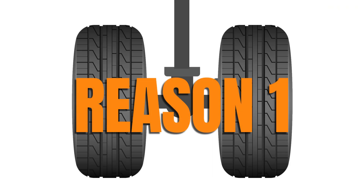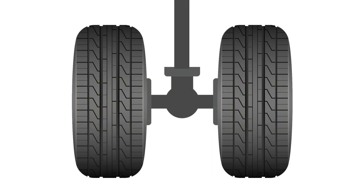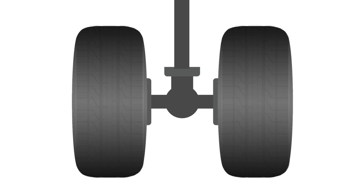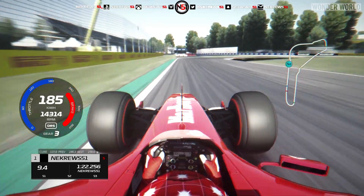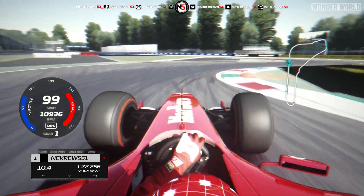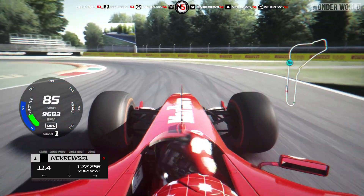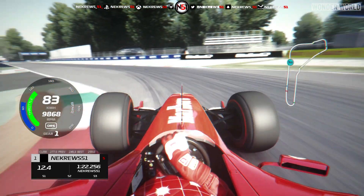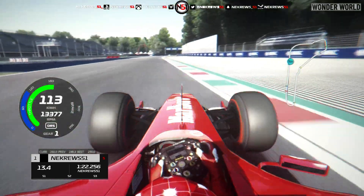Reason 1: A zig-zag tread pattern similar to a car tyre would quickly clog during landings due to significant tyre abrasion, turning the tyre into a slick tyre like they use in Formula 1, which is only good for maximising grip on dry roads, but terrible for wet roads.